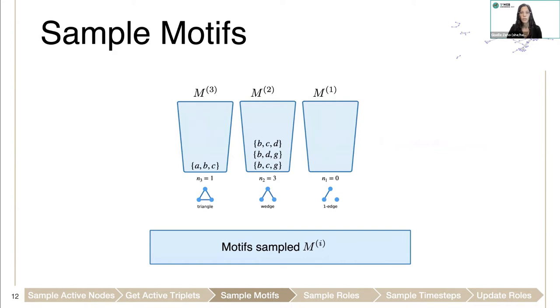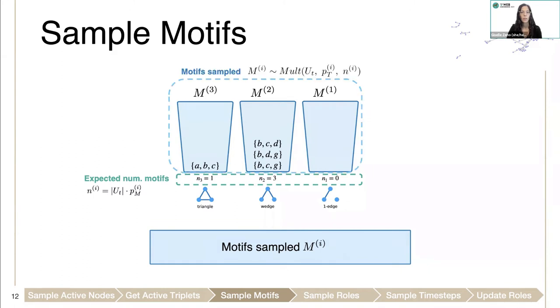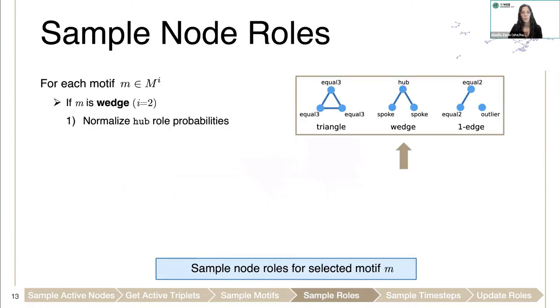Then, to sample the motifs, we'll use the expected counts for each motif type, and then we'll sample the motifs using the probabilities I explained before from a multinomial distribution. Then, after sampling the motifs, we'll need to sample the node roles we're assigning them.